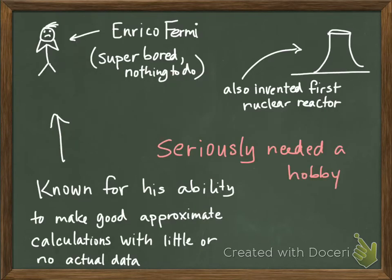Fermi questions are a class of questions where you make really large estimates of things that you can't actually count. They're named after this guy called Enrico Fermi. I'm pretty sure he was super bored, had nothing to do. He was Italian. He was also the person who invented the first nuclear reactor, and he was known for his ability to make good approximate calculations with little or no actual data.